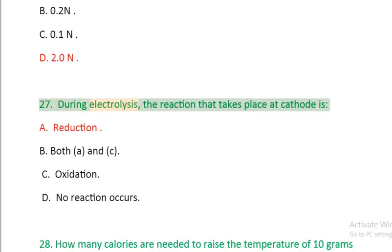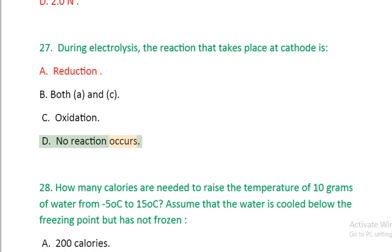Question 27: During electrolysis, the reaction that takes place at cathode is: A. Reduction, B. Both A and C, C. Oxidation, D. No reaction occurs.